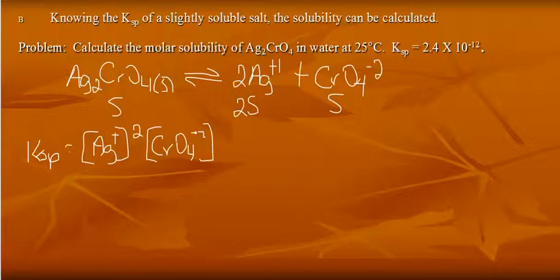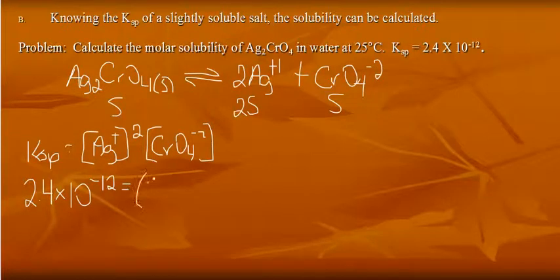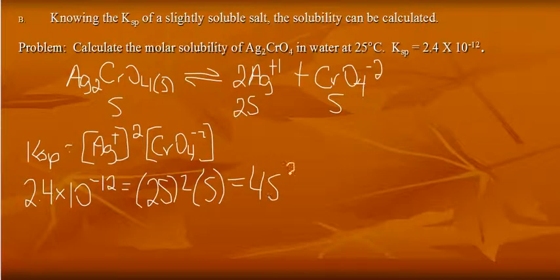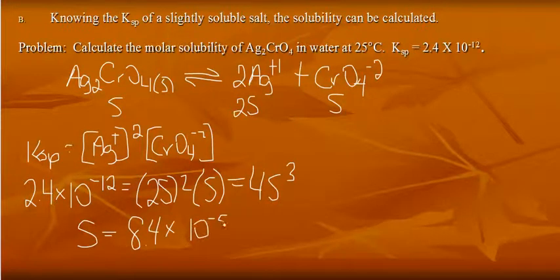We know the value for Ksp. It's 2.4 times 10 to the negative 12th. Plug in the values that we have. Silver is 2S. That's squared. Chromate is just S. Now 2S squared is actually 4S squared times another S is 4S cubed. So S, which is the solubility of the solid, comes out to a value of 8.4 times 10 to the negative 5 molar.